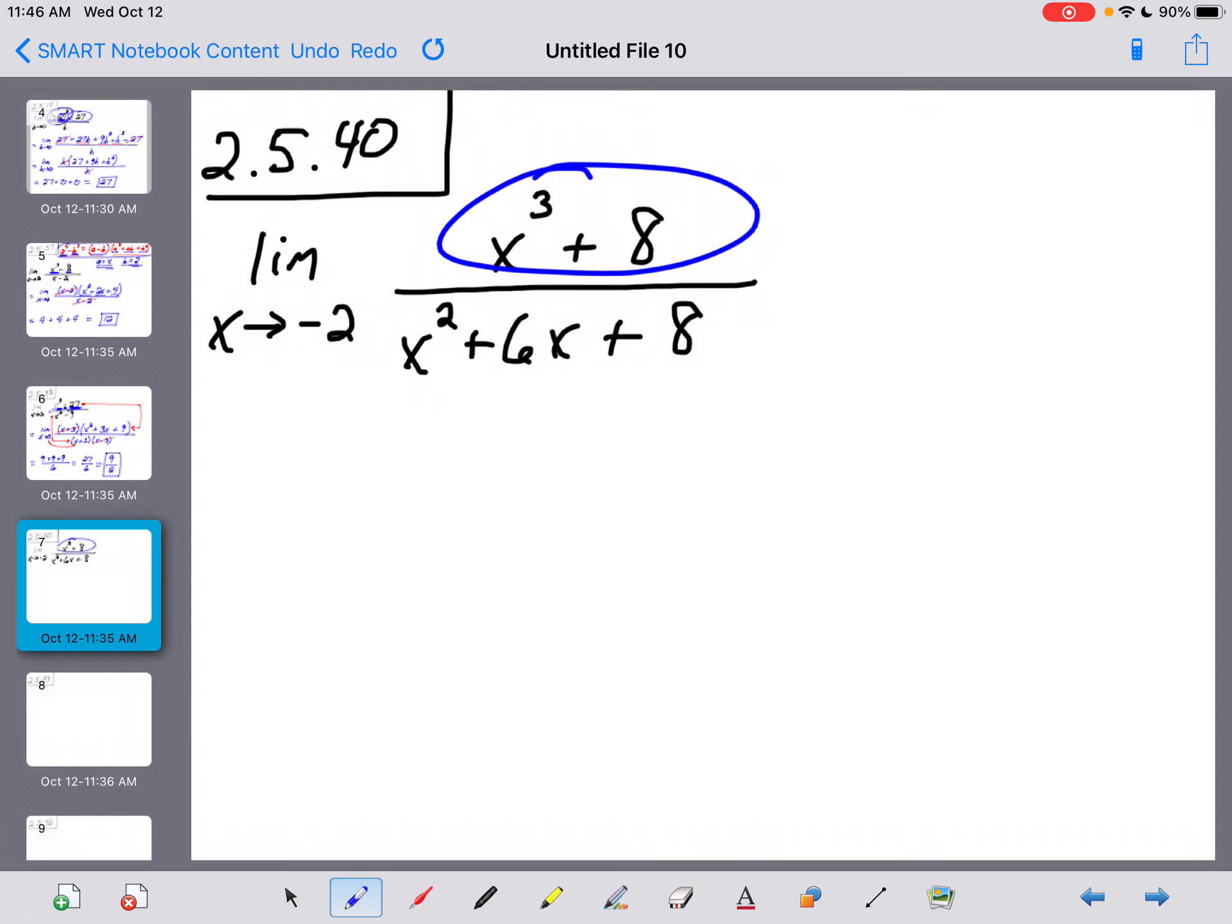Now a sum of cubes can be factored, and I'm going to show you how to do that. Although, there's another way around this problem as well, and it's a little method that I showed you guys in notes when we did 2.5. The denominator here is just a normal quadratic trinomial.